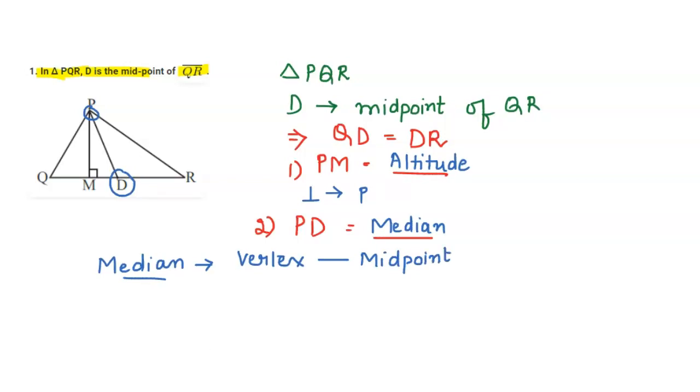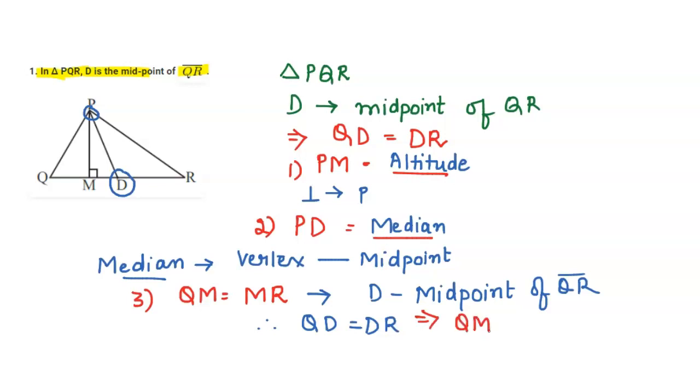The third question asks: Is QM equal to MR? This is clearly seen that as D is the midpoint of line QR, therefore QD equals DR. But we can say that QM is not equal to MR. I hope this is clear, thank you.